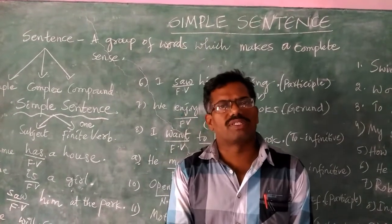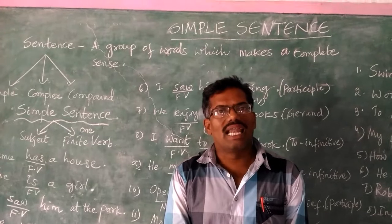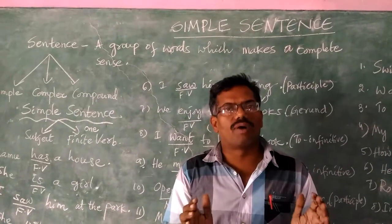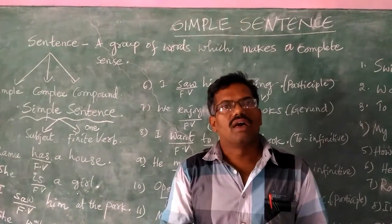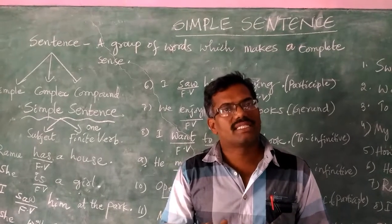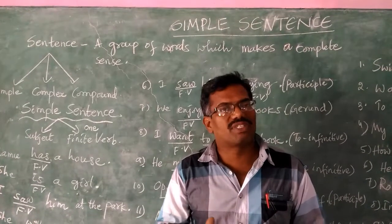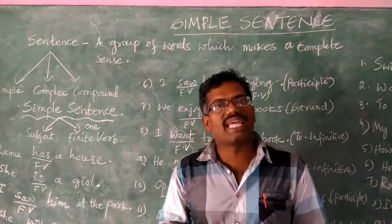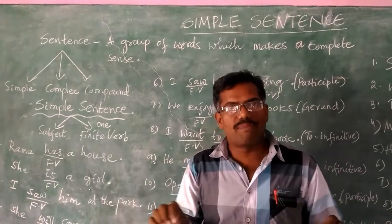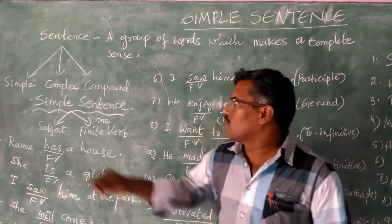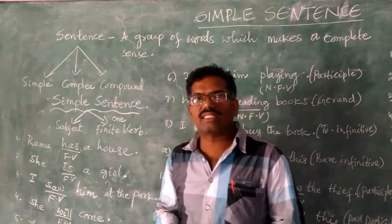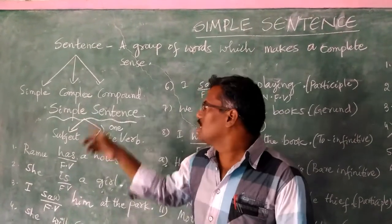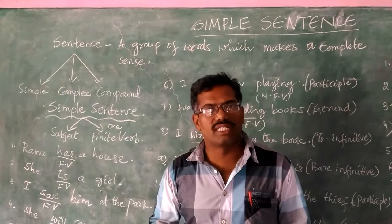Before knowing simple sentence, let us know what is a sentence. A sentence is a group of words which makes a complete sense. On the basis of structure, the sentence can be categorized into three parts: one is simple sentence, second one is complex sentence, and third one is compound sentence.